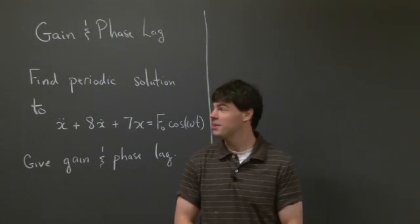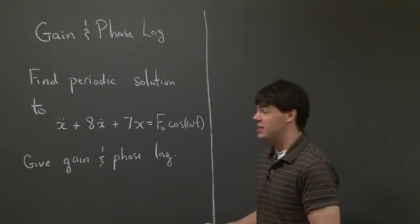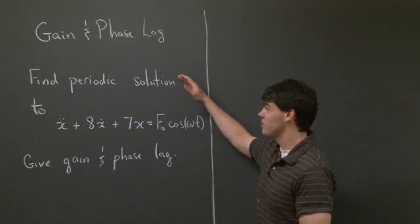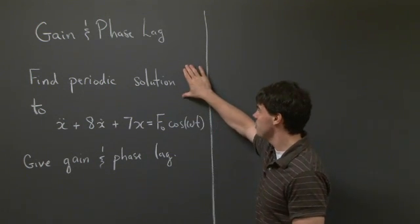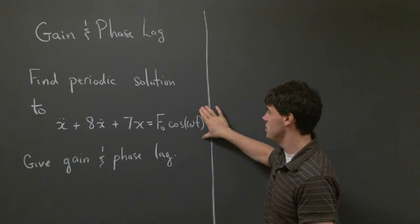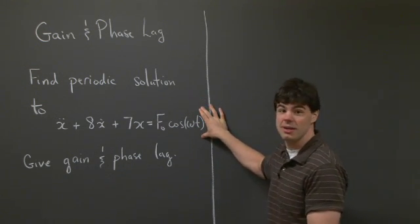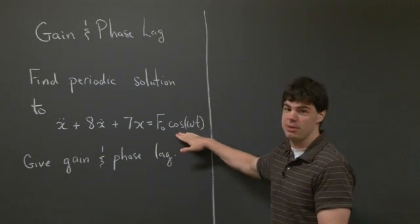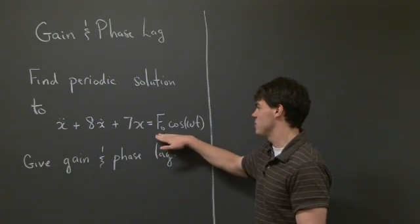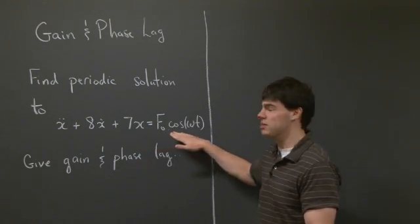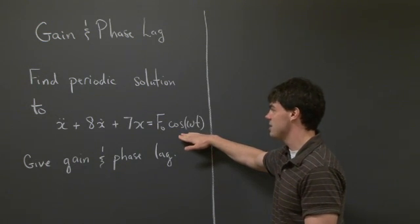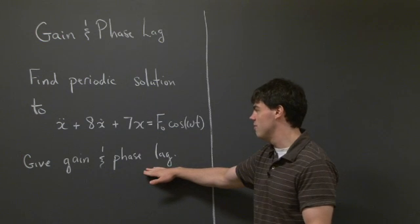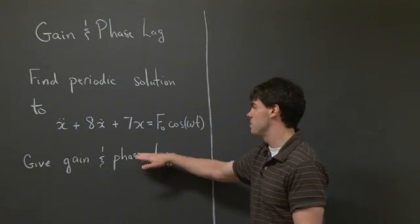Hi everyone, welcome back. Today I'd like to take a look at gain and phase lag. We're going to consider the simple problem: find a periodic solution to x-double-dot plus 8x-dot plus 7x equals f0 times cosine(ωt). Basically, it's just forcing a differential equation with some frequency cosine(ωt). The problem we're interested in today is to give the gain and phase lag to this periodic solution.